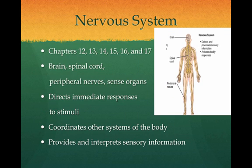The nervous system includes major organs such as the brain, the spinal cord, peripheral nerves, and sensory organs. It directs immediate responses to different stimuli, coordinates and moderates other systems, and provides and interprets sensory information about conditions inside and outside the body. We will study the nervous system in Chapters 12 through 17.